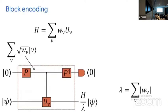To give a speed course in block encoding and linear combination of unitaries: you have some target system and an ancilla. Given a Hamiltonian as a linear combination of unitaries u_ν with weights w_ν, the preparation gives a superposition with square roots of weights. You do a controlled unitary, inverse prepare, and project onto zero — what you get is that Hamiltonian applied to the target state.